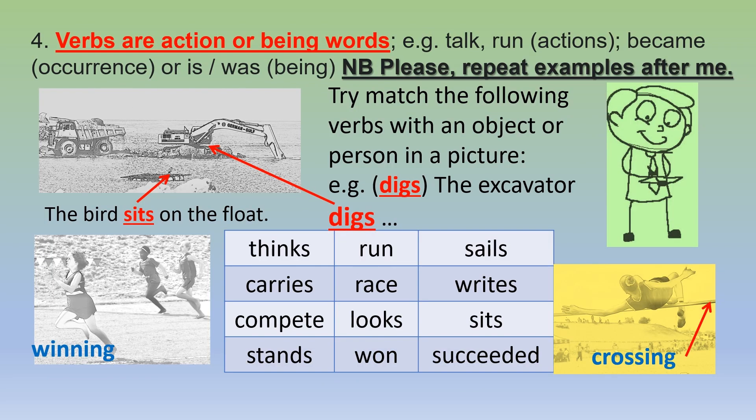Four: verbs are action or being words. For example, talk and run are actions; became is occurrence; is, was — being. Please repeat examples after me. Try and match the following verbs with an object or person in the picture. For example, 'digs' will be the excavator — the excavator digs. The bird sits on the float.